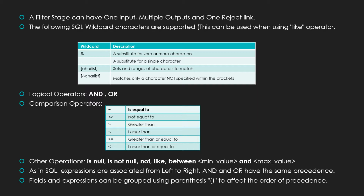Similar to any SQL language, we can combine multiple expressions using the logical operators AND and OR. When AND and OR are used together in an expression, the association happens from left to right — AND is evaluated first, OR is evaluated later. Parentheses can be used to group expressions and control the order of precedence. The basic comparison operators are: equal to, not equal to, greater than, less than, greater than or equal to, and less than or equal to.